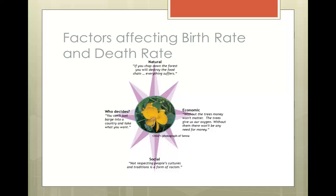As geographers, you can be examined on the factors which affect both birth rates and death rates. A useful way of thinking about this is using the development compass rose, which allows us to think about various different factors: environmental factors, economic factors, social factors, and political factors. If we consider all of these factors together or individually, this allows us to come up with various reasons why. This is not a definitive list — there are many more which your teachers will have gone through with you in class.